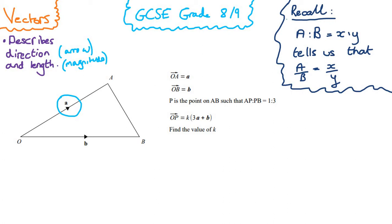Something we also need to know about ratios: if we have a ratio such that a to b is x to y, where x and y are normally numbers, this tells us that a divided by b equals x divided by y. This is the fundamental rule of ratios that we need to know.